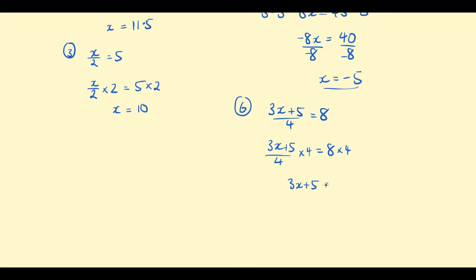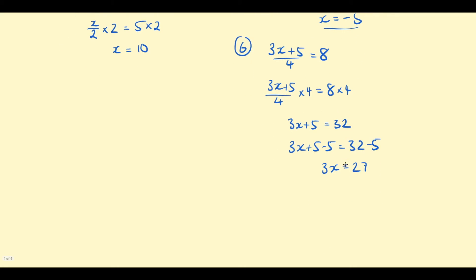3x plus 5 on 4 multiplied by 4 is just 3x plus 5. On the right-hand side, 8 times 4 is 32. Now we can deal with that positive 5 — this is now like the previous example. We want to subtract 5. So we'll have 3x plus 5 take 5 equal to 32 take 5. Plus 5 take 5 is 0, so we're just left with 3x. 32 take 5 is 27. And now finally, the last step to get x by itself: do the inverse of multiplying by 3, which is dividing by 3. 3x divided by 3 is just x, and 27 divided by 3 is 9. So the answer for x is 9.